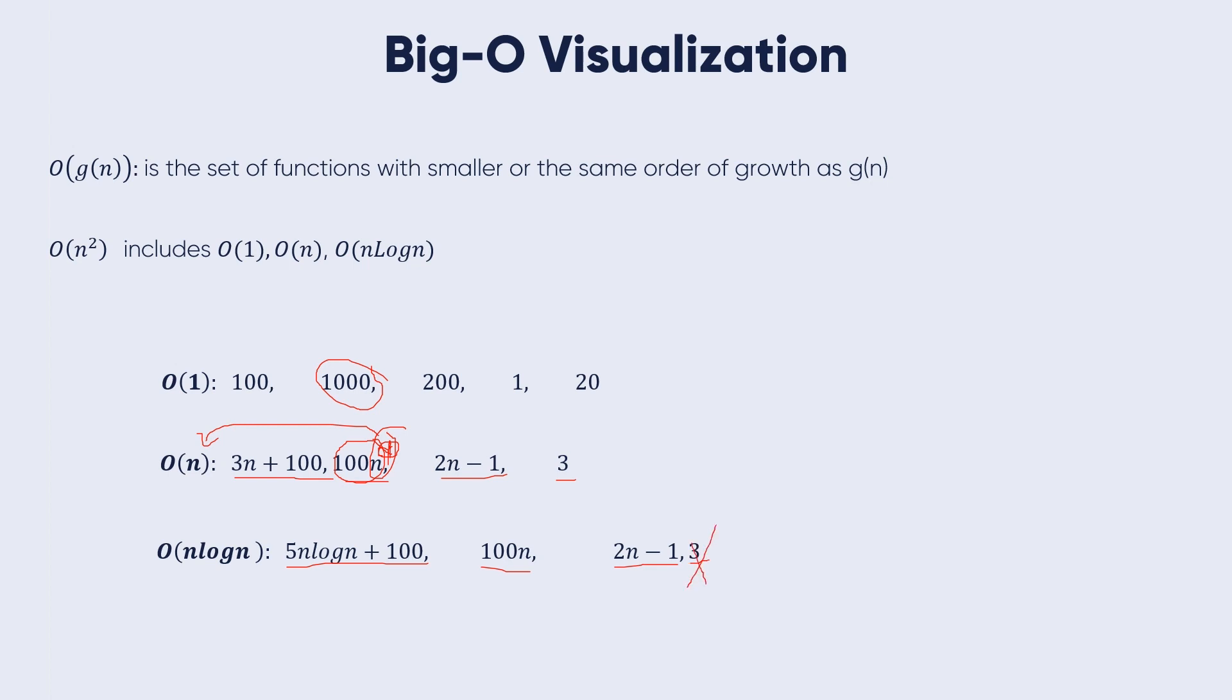We have n, we have n, but we have here 5n log n. So n log n is greater than n. So it takes O(n log n) and not n.